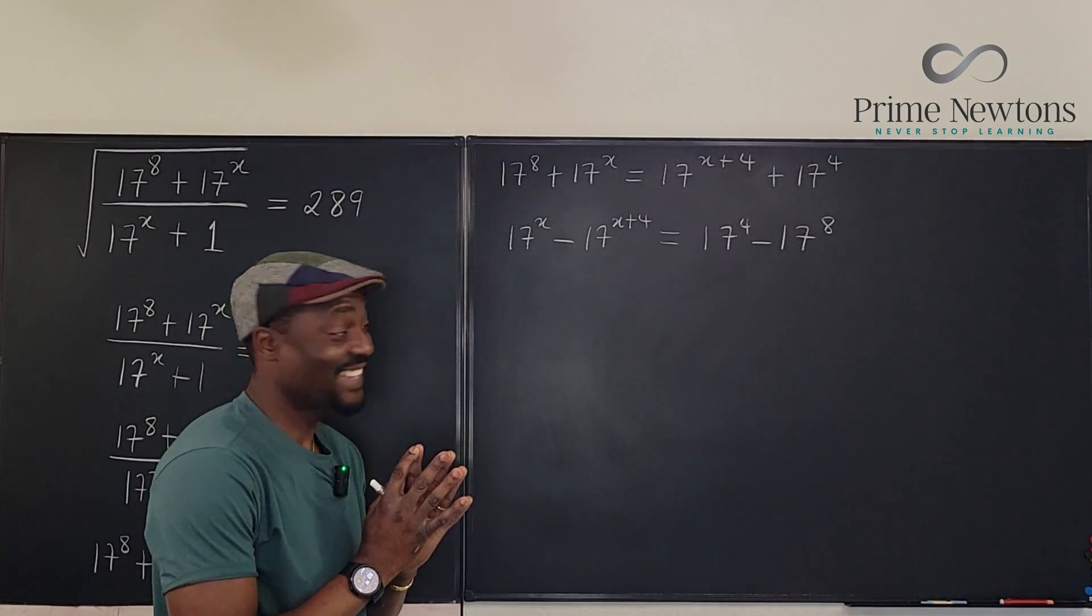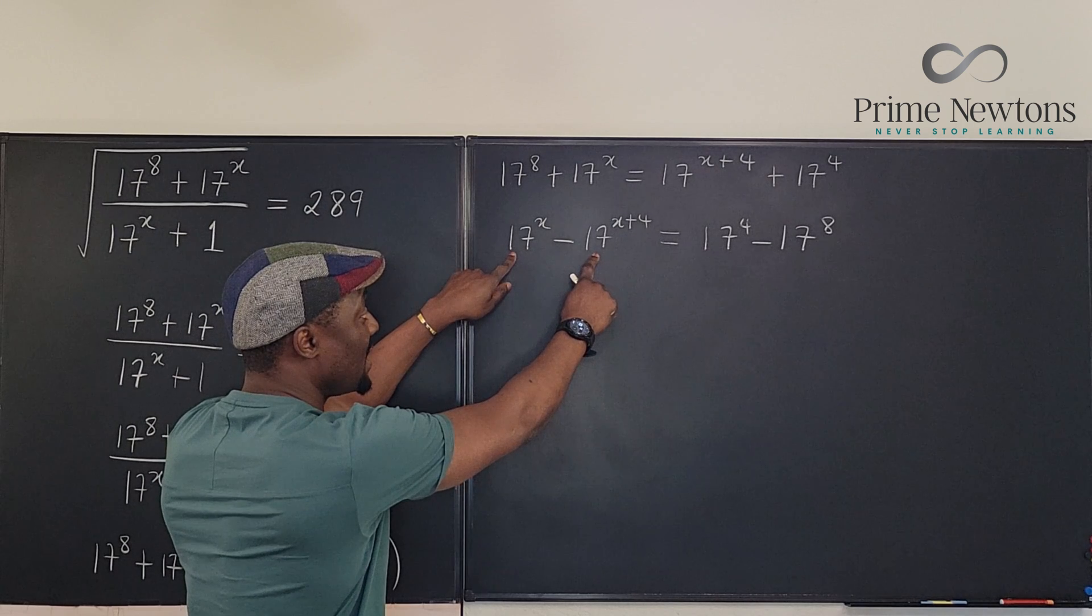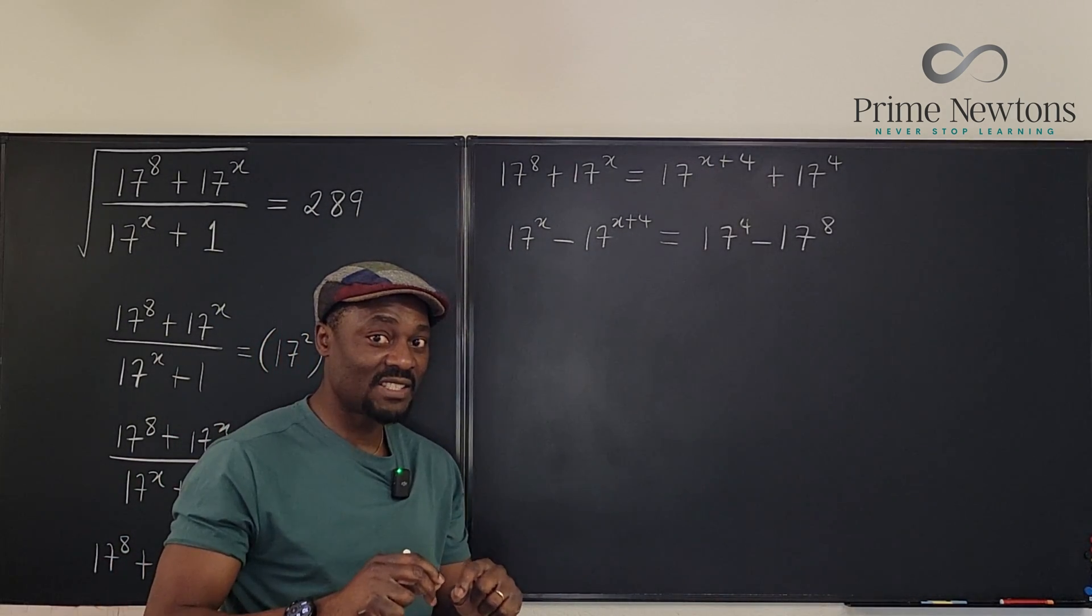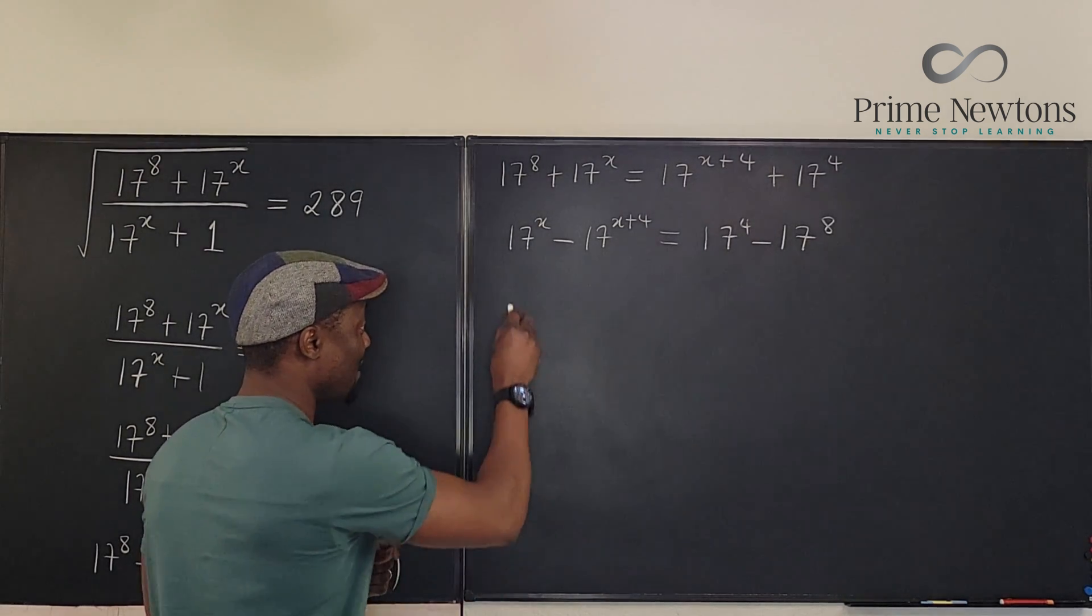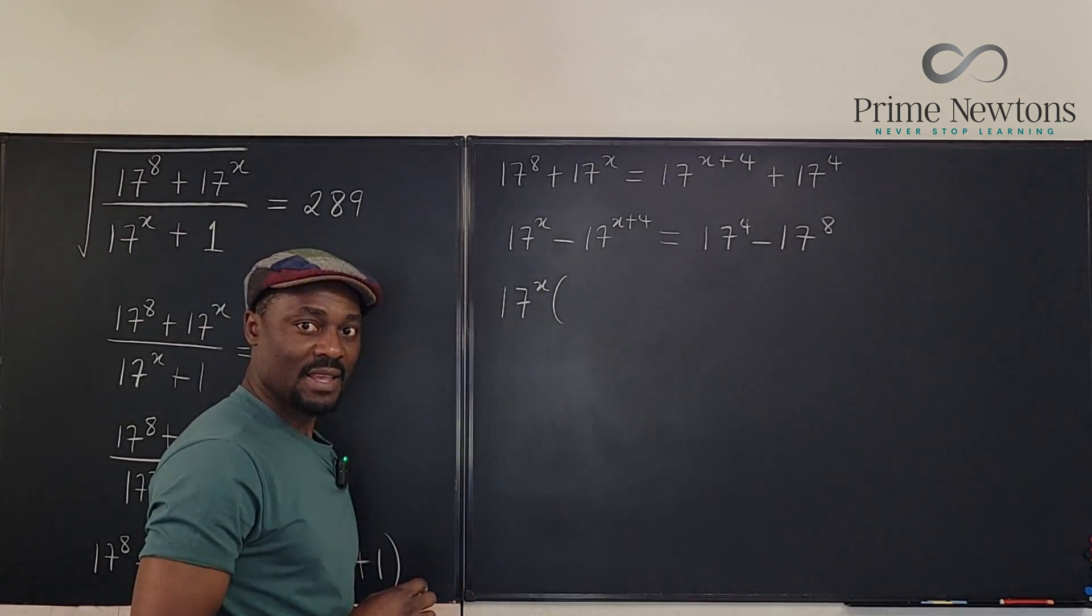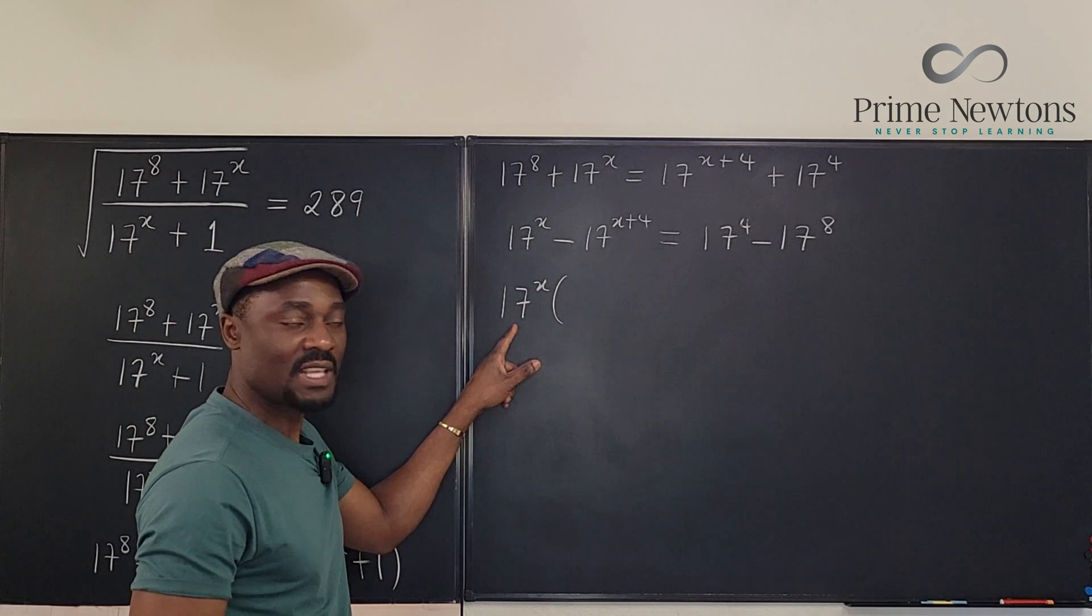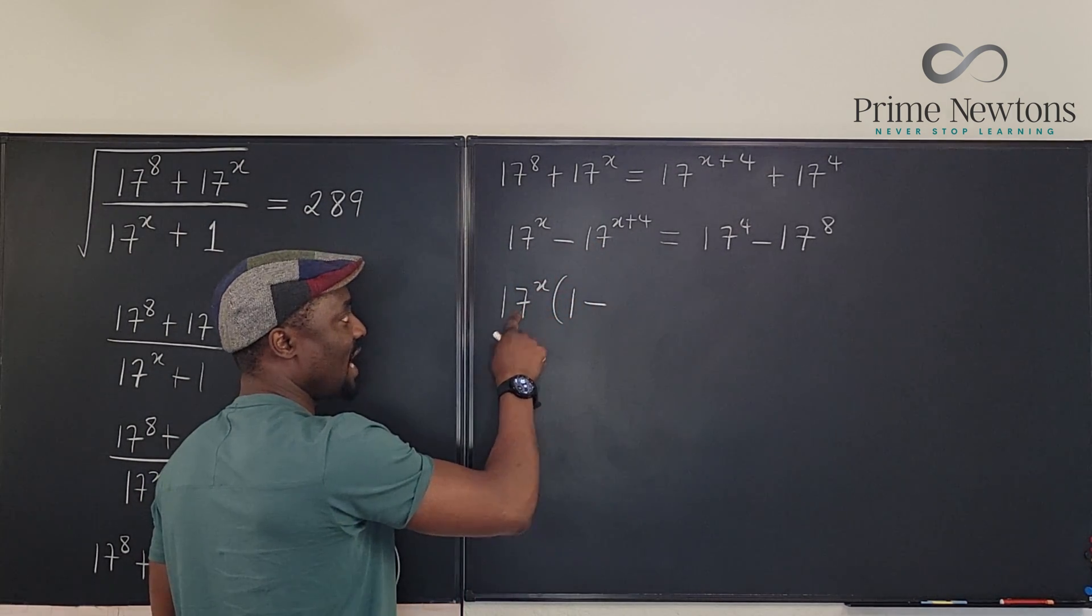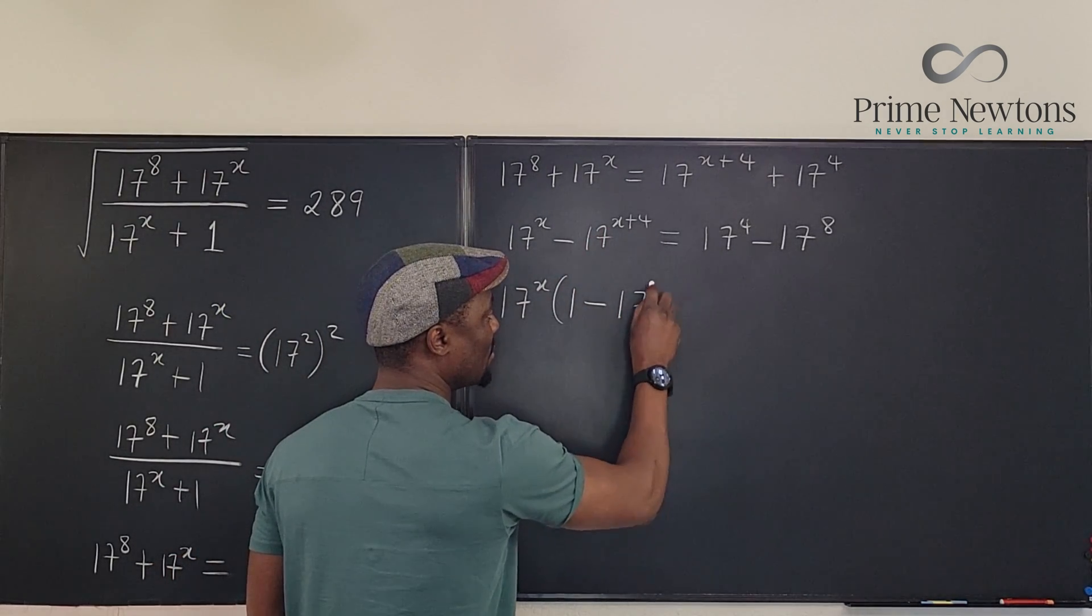I don't know. It doesn't look like there's something. Oh, I see 17 to the X here. I can factor out 17 to the X. Remember, factoring is the same thing as dividing. So if I factor out 17 to the X, I'm saying I am dividing each of these terms by 17 to the X. So what I have here is going to be 1 minus 17. If I divide this by 17 to the X, it's like subtracting the exponents. I'm going to have 17 to the 4th here.